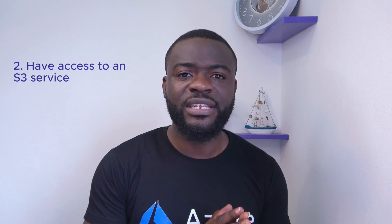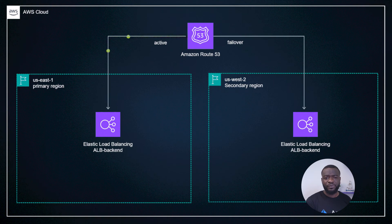Setting up a static website on S3 will give you a good conversation when talking with recruiters about your experience with S3 and related services. To complete this project, you just need access to your AWS account and the S3 service. If you've built a static website using HTML, CSS, or JavaScript, you can import those files into S3 and configure Route 53 to expose the application to the outside world.